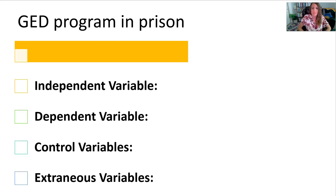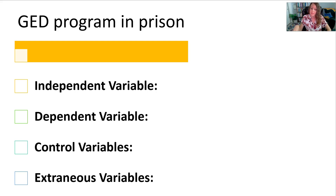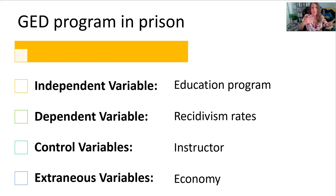For the final example, imagine that in a prison setting, someone starts a program to help incarcerated individuals get their GEDs if they hadn't completed high school. The goal is to give them more job opportunities upon release, with the ultimate aim of reducing recidivism. The independent variable is the GED education program itself — the curriculum and intervention. The dependent variable could be recidivism rates: how many program completers end up back in prison within a given time period.